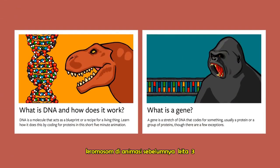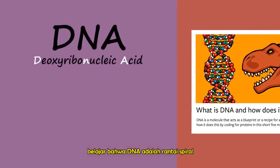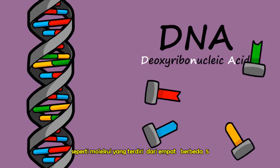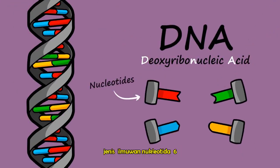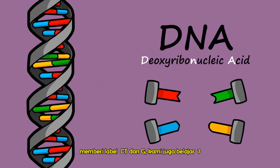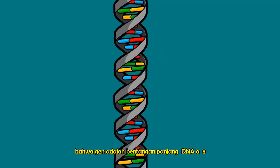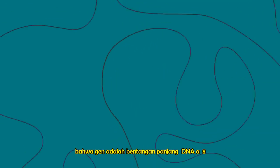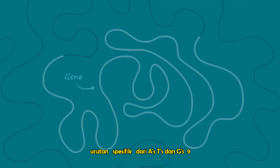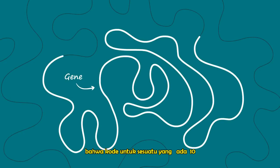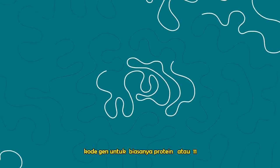In previous animations, we learned that DNA is a spiraling chain-like molecule made up of four different types of nucleotides. Scientists have labeled them A, C, T, and G. We also learned that a gene is a long stretch of DNA — a specific sequence of As, Cs, Ts, and Gs that code for something. What does a gene code for?